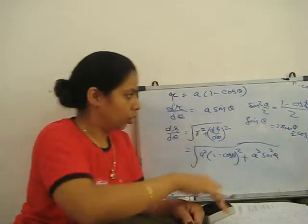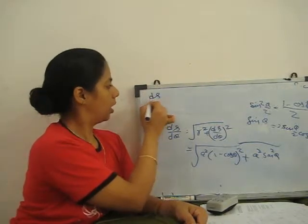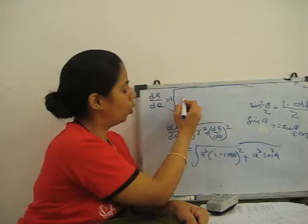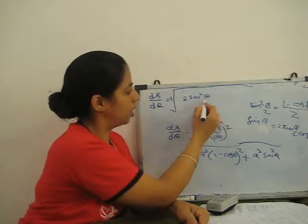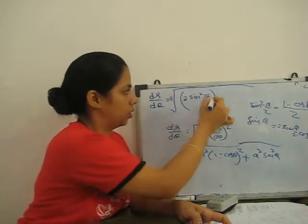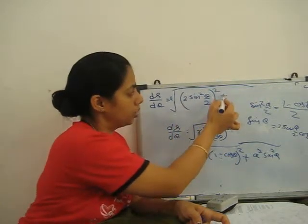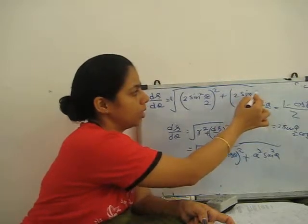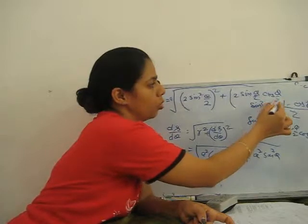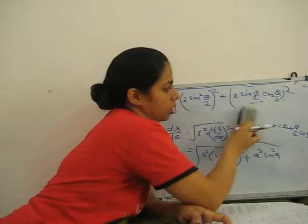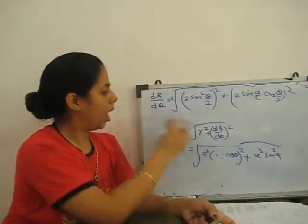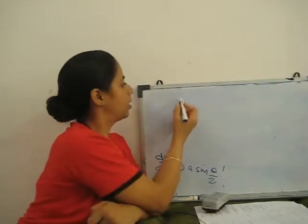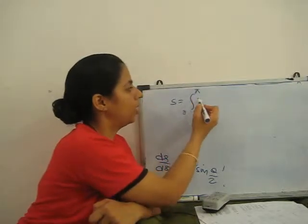We convert both terms in θ/2. Now substitute into the required formula. S = integral from 0 to π of 2π · r·sinθ · (ds/dθ) dθ. Here r = A(1 - cosθ), sinθ = 2sin(θ/2)cos(θ/2), and ds/dθ = 2A·sin(θ/2).